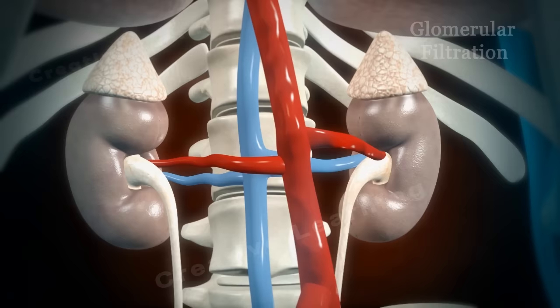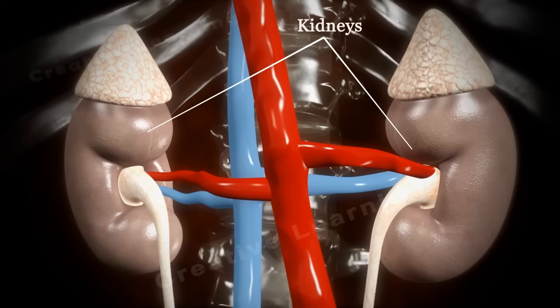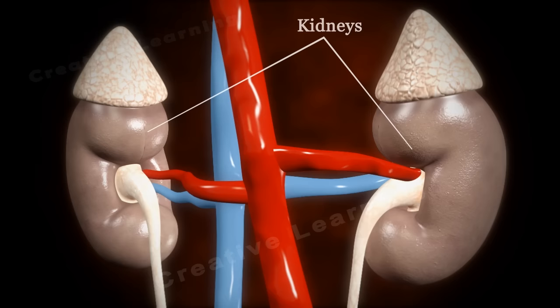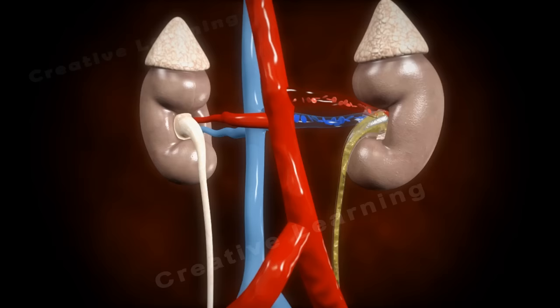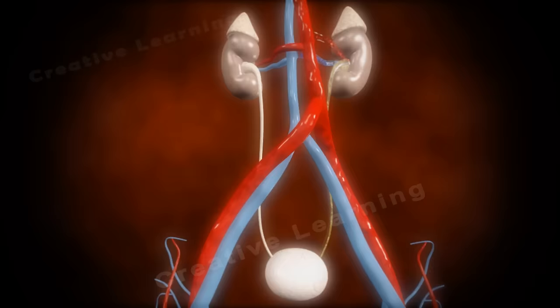Glomerular Filtration. Kidneys are bean-shaped organs which filter blood. They remove waste substances from the blood and regulate water and electrolyte concentrations within the body fluids. The end product of this function is urine, which is excreted outside of the body through the urethra, containing wastes, excess water, and excess electrolytes.